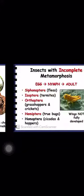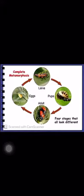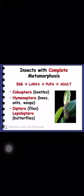Then comes complete metamorphosis, in which the young ones are totally different from the adult. The egg develops into a larva, the larva forms a pupa, and from the pupa emerges an adult. All four stages are totally different. For example, in the butterfly, there is a pupa, and the larval form is the caterpillar. Complete metamorphosis occurs in beetles, bees, flies, butterflies, etc.